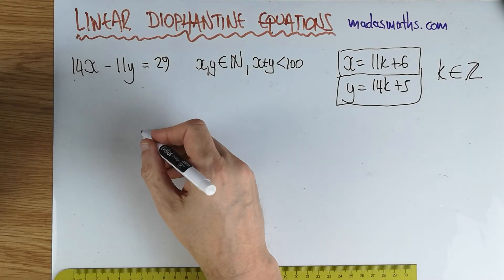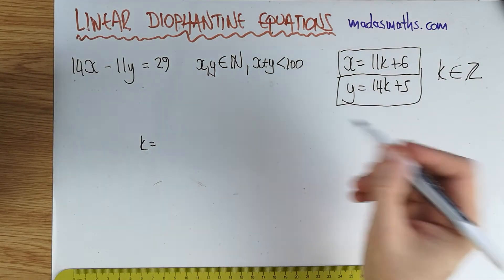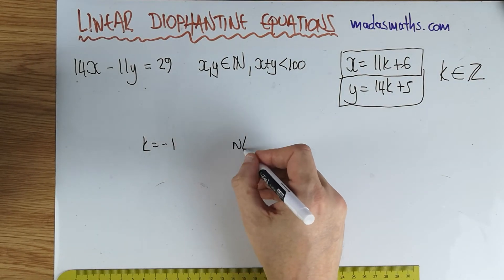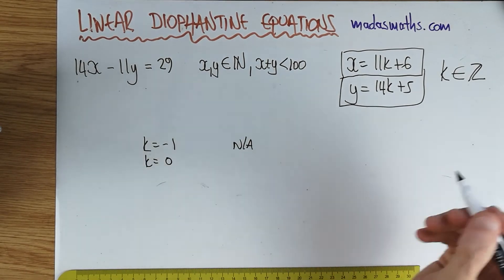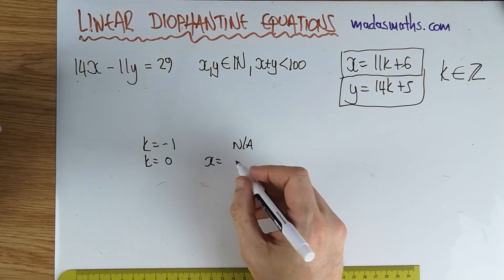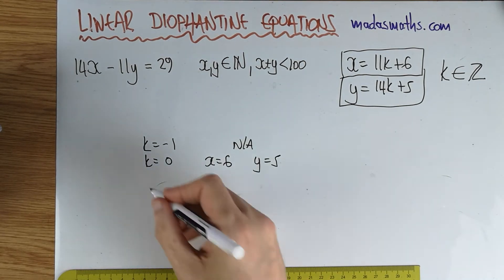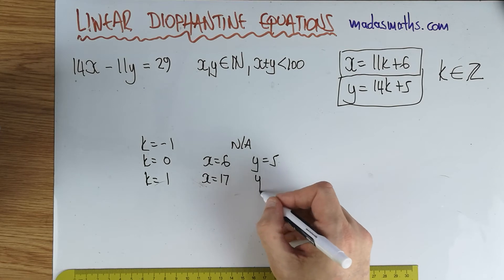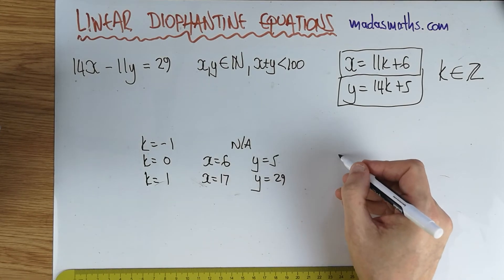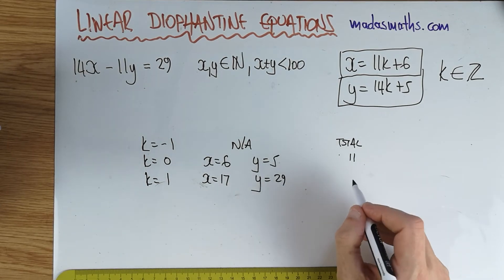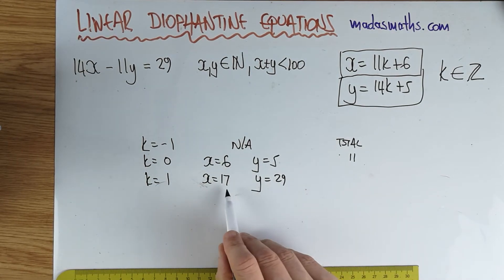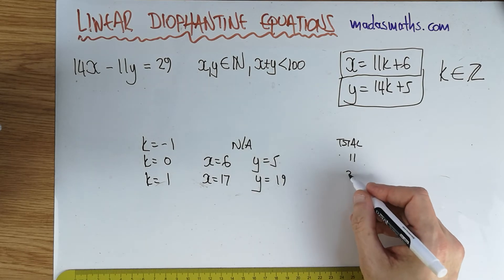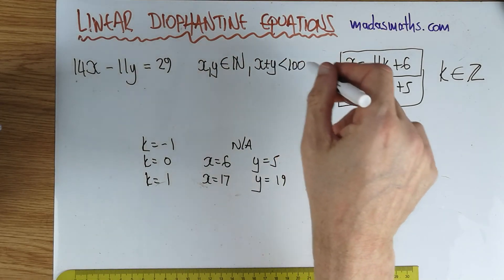So to satisfy this condition, we're going to start with some values of k. k is equal to minus 1, of course, we discussed that there's nothing there, not applicable. k is equal to 0 produces x is equal to 6 and y is equal to 5. That will balance it. k is equal to 1 gives 17 and y is equal to 19. That gives a total of 36. Basically, I'm doing x plus y.